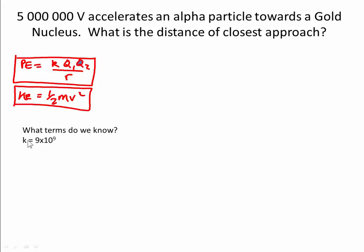What do we know? We know that the constant is K which is 9 times 10 to the 9. The first charge is 79 electron units, 79 times the fundamental charge. Q2 is 2 times the fundamental charge.